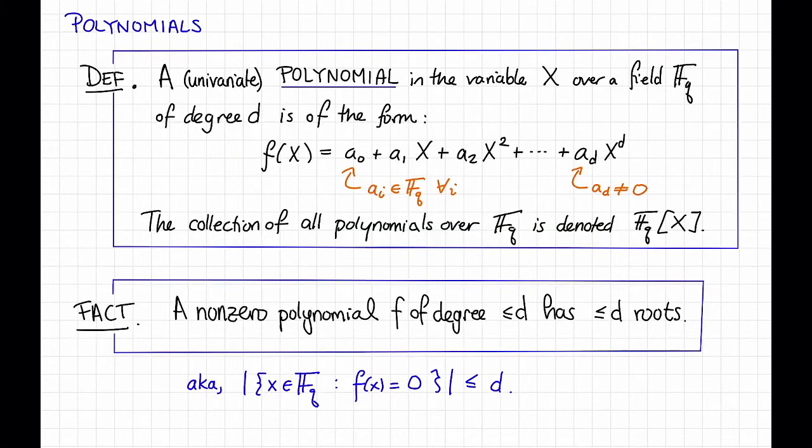We can define a polynomial over a finite field the same way as we do over the reals. That is, we say that a univariate polynomial in the variable capital X over the field f_q of degree d is of the form f(x) = a_0 + a_1*x + a_2*x^2 + ... + a_d*x^d, where all of the coefficients a_i come from this field and the top coefficient a_d is non-zero.